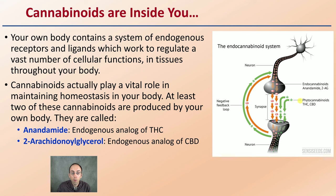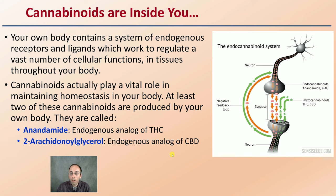At least two cannabinoids produced by your own body are anandamide, which is an analog to the THC molecule, and 2-arachidonoylglycerol, which is an agonist analog to the CBD molecule — both of which are also produced by cannabis.